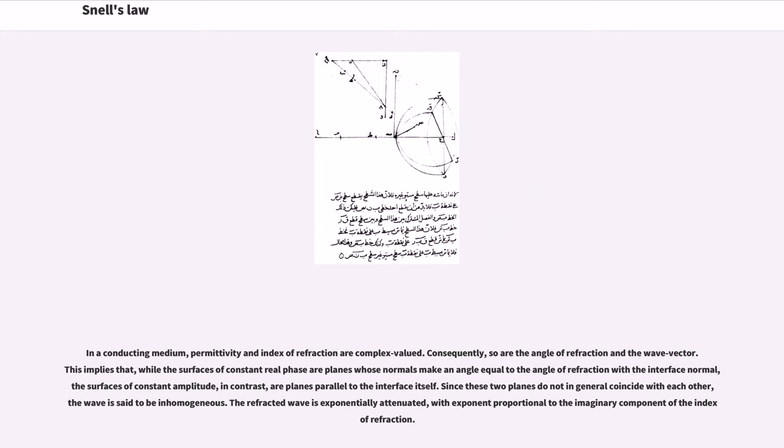the surfaces of constant amplitude, in contrast, are planes parallel to the interface itself. Since these two planes do not in general coincide with each other, the wave is said to be inhomogeneous. The refracted wave is exponentially attenuated, with exponent proportional to the imaginary component of the index of refraction.